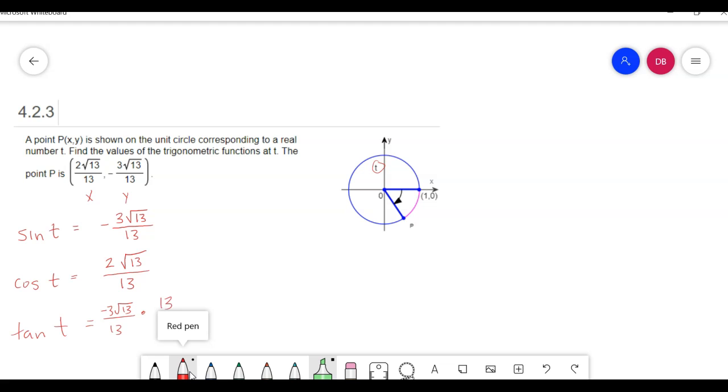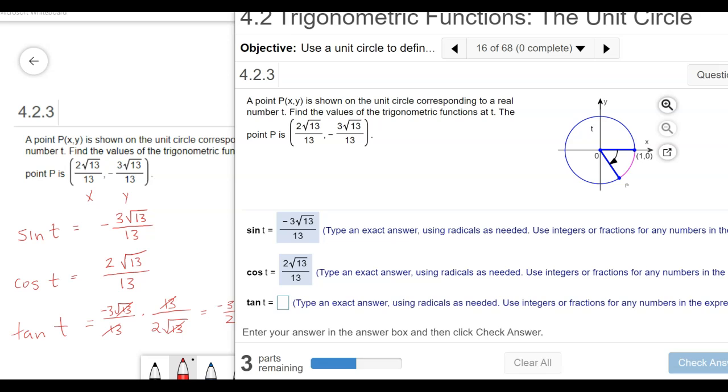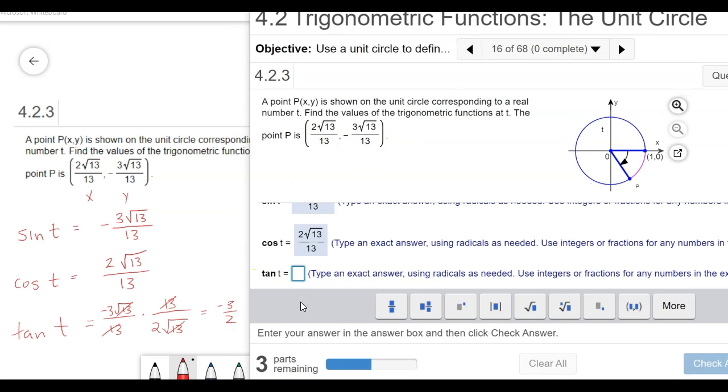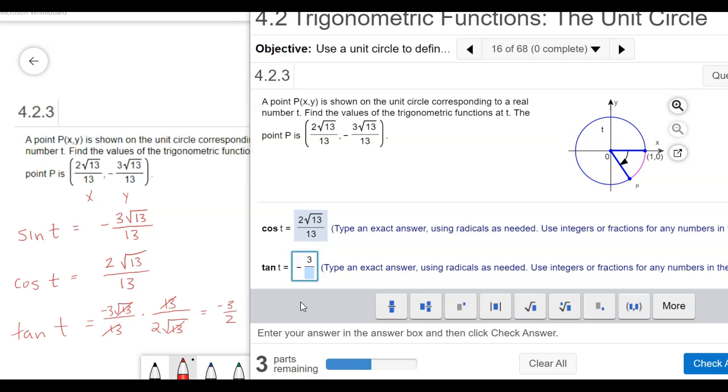I'm going to put the 13 on the top and that 2 radical 13 on the bottom. What's going to happen here is the 13s are going to cancel, the square root of 13s are going to cancel, and I end up with negative 3 halves. So there is my third one, the first one that I actually have to do a little bit of math to come up with.